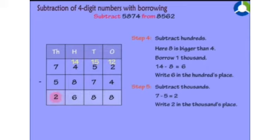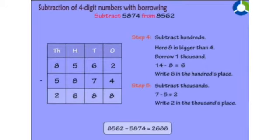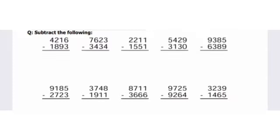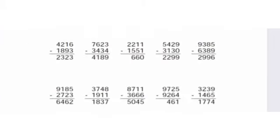So we can say 8562 minus 5874 equals 2688. Now we will solve the worksheet on subtraction. Question 1: 4216 minus 1893. You will get 2323.